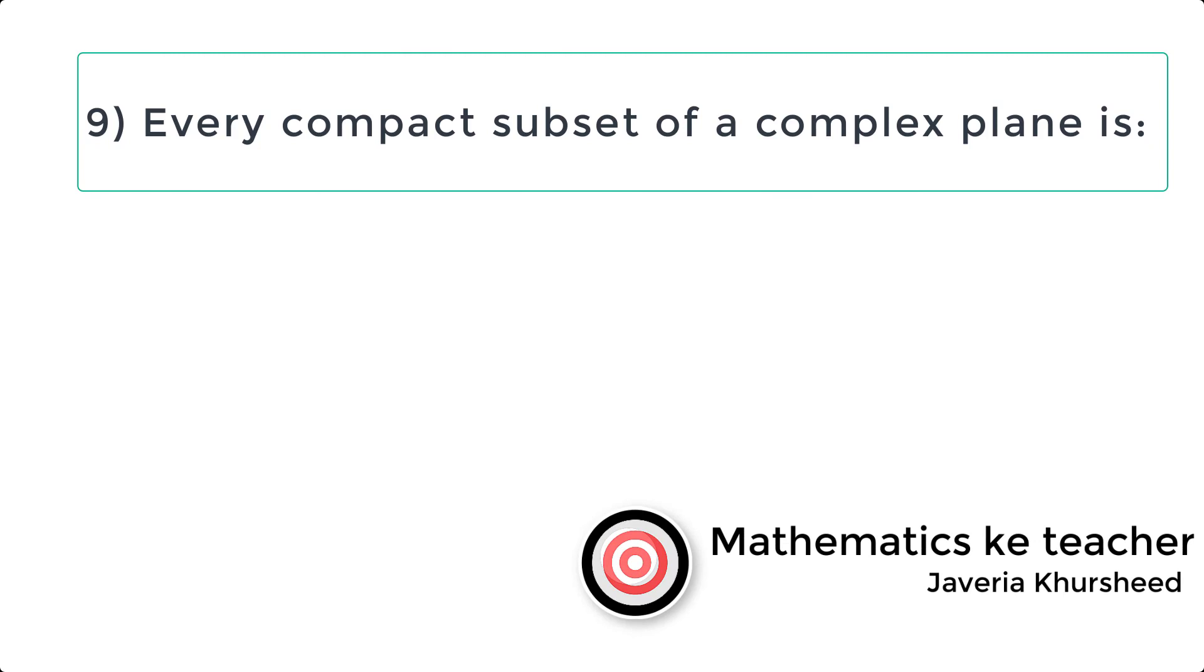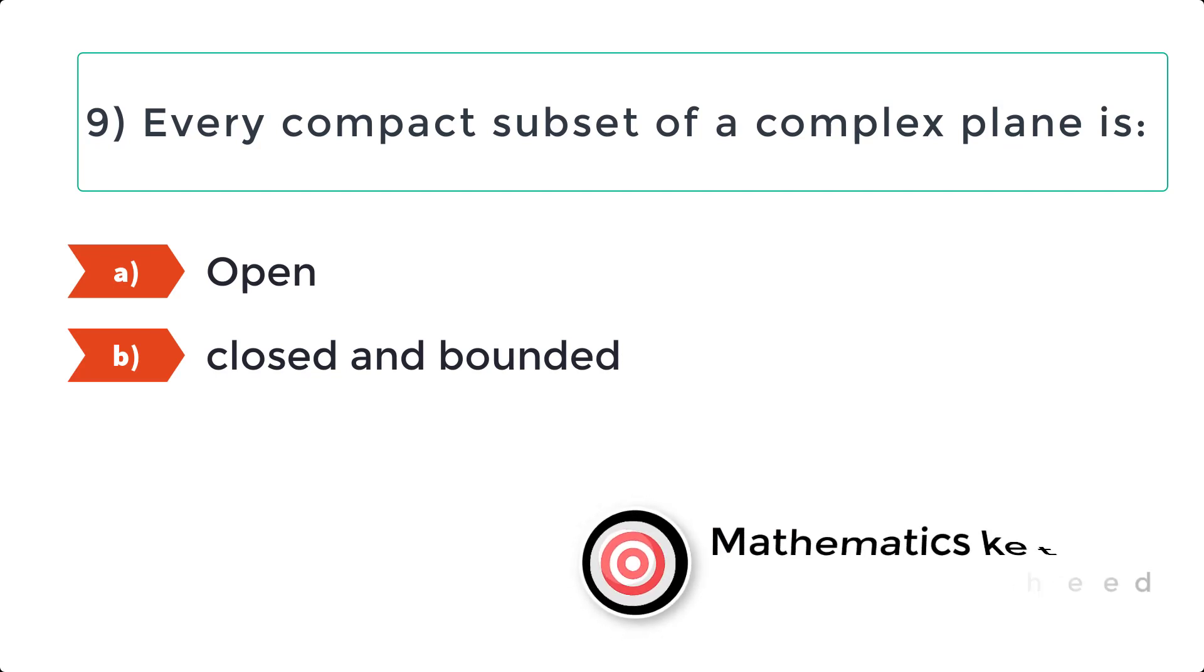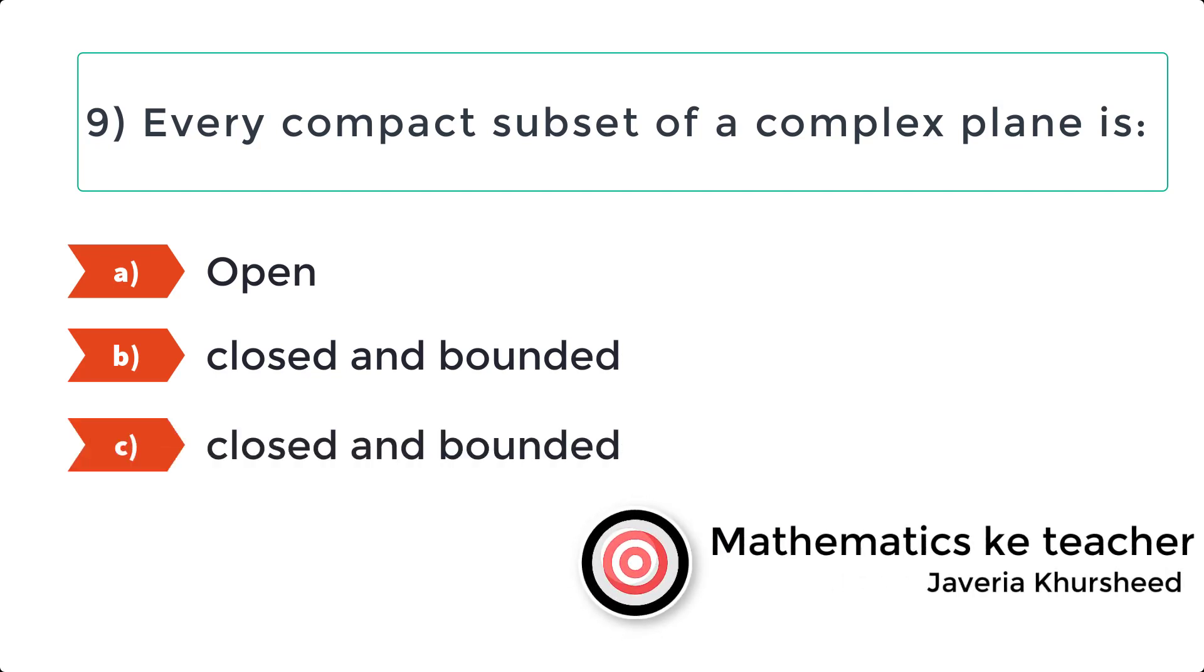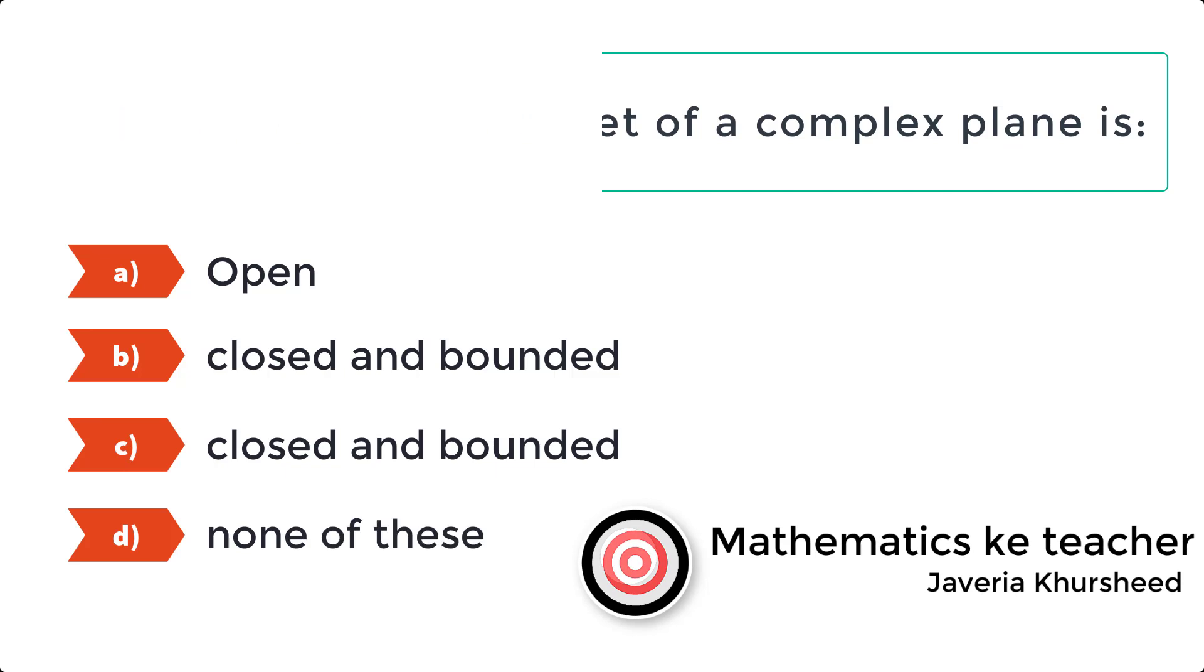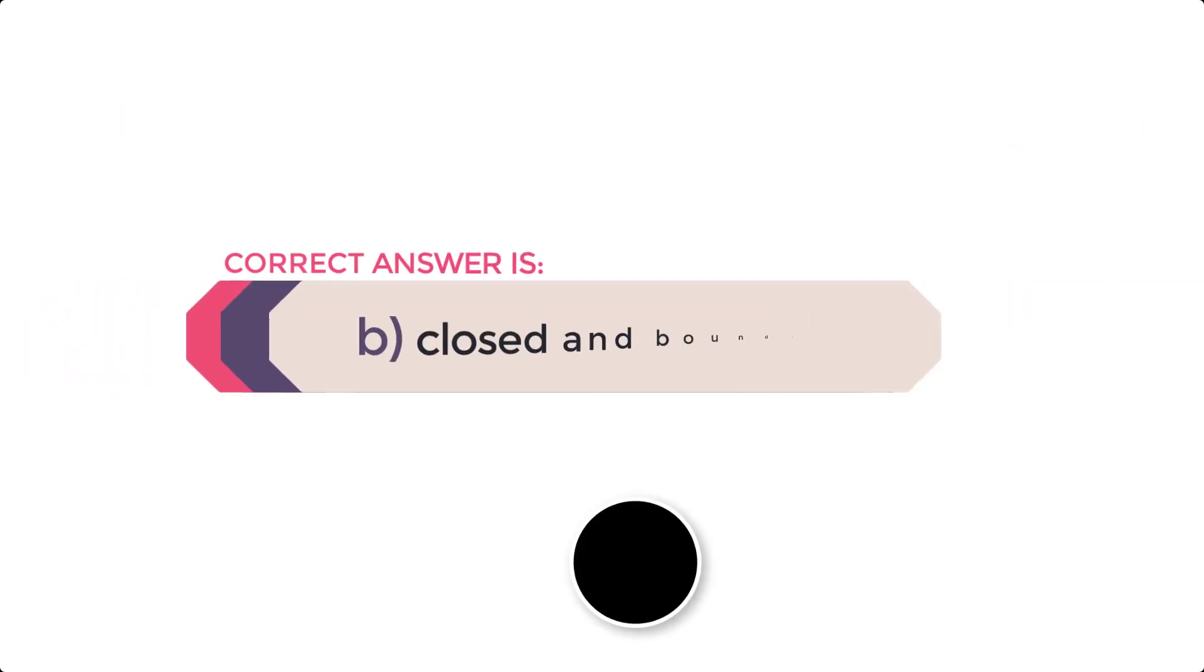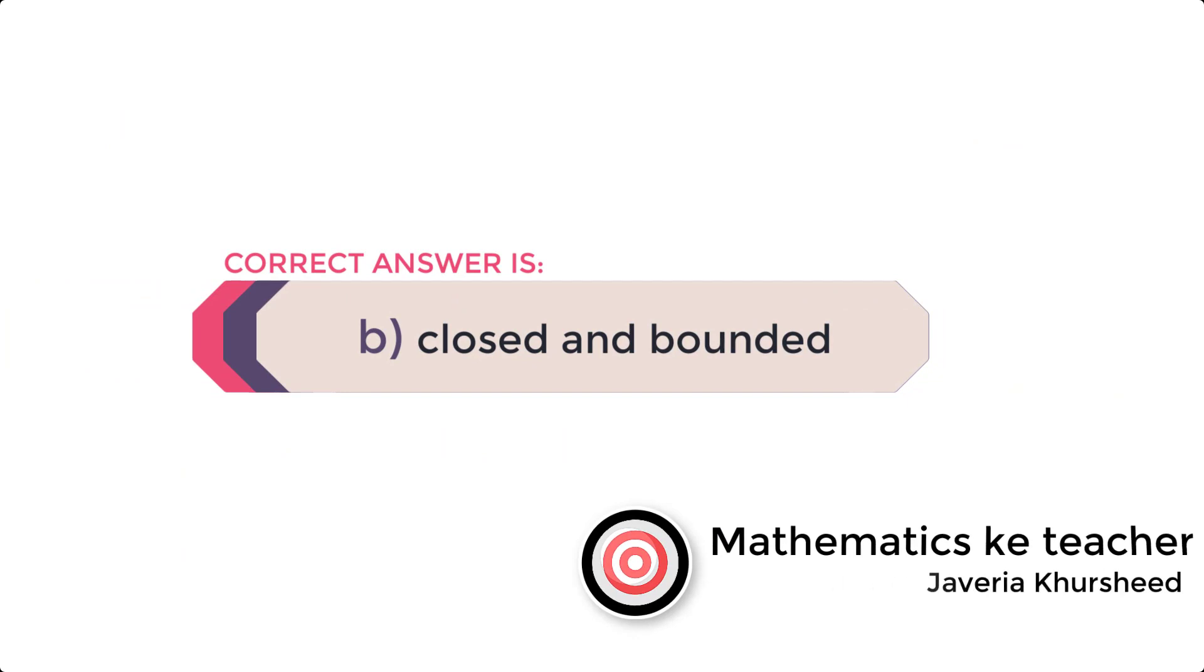Question 9: Every compact subset of a complex plane is: a) Open, b) Closed and bounded, c) Closed and bounded, d) None of these. Correct answer is b) Closed and bounded.